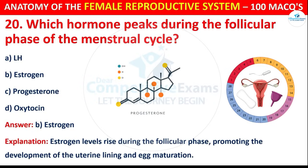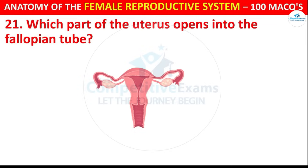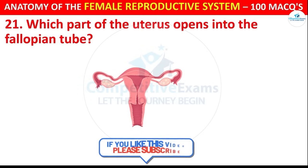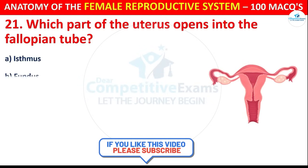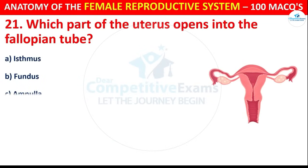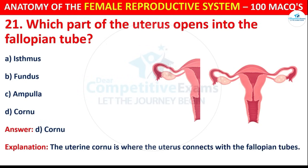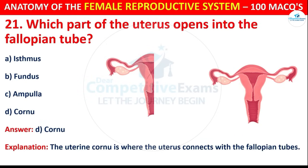Question number 21: Which part of the uterus opens into the fallopian tube? Options are: Isthmus, Fundus, Ampulla, or Cornua. The correct answer is D, i.e. Cornua. The uterine cornua is where the uterus connects with the fallopian tube.